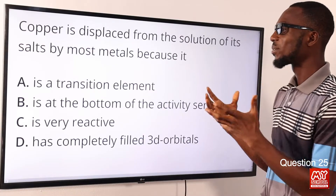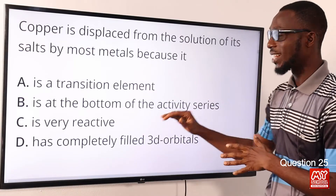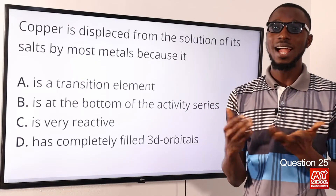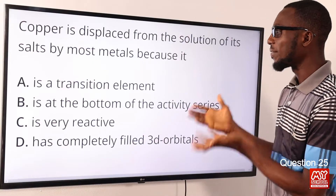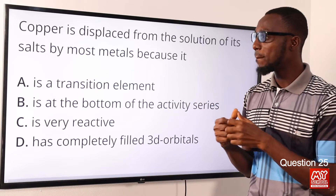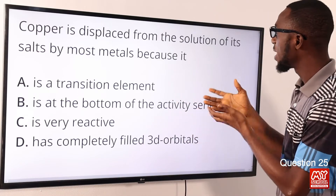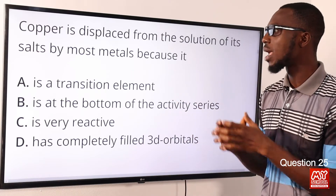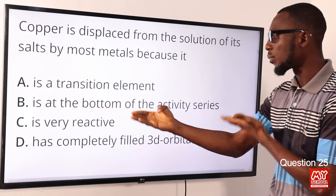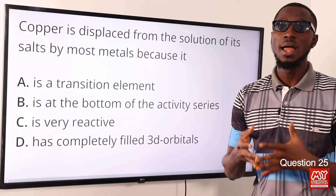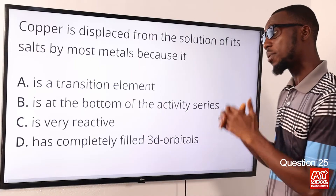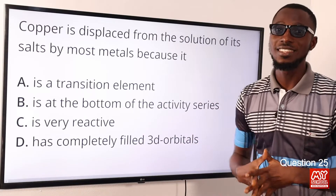Question 25: Copper is displaced from the solution of its salt by most metals because it is what? This is due to its position in the activity series or the electrochemical series. It is just beneath hydrogen, so definitely most metals will displace it. The correct option is option B — copper is displaced from the solution of its salt by most metals because it is at the bottom of the activity series. After copper we have mercury, then silver and gold.